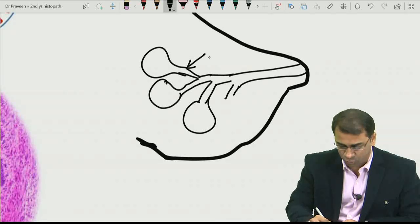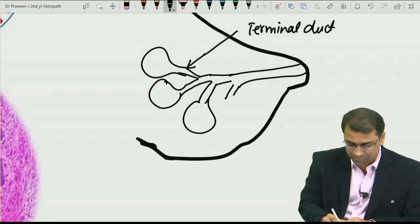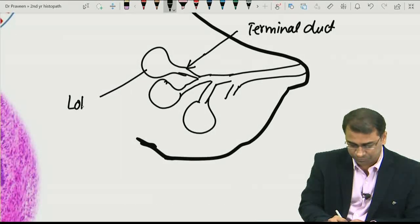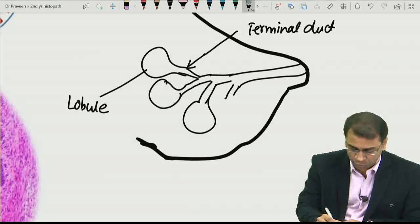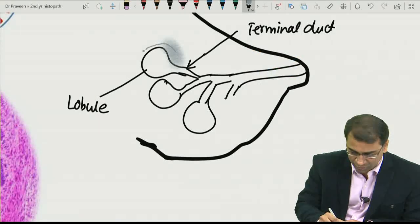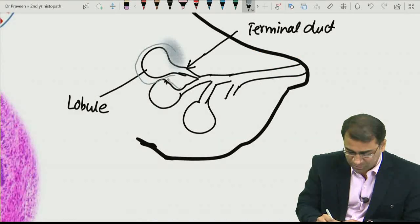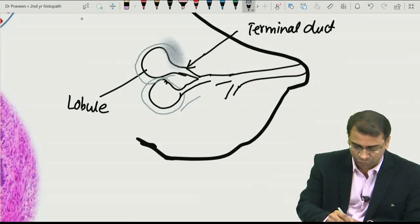Now, this part is called as terminal duct, and this part is called as lobule. Then what happens? Around the lobule, there are some stroma. The stroma around the lobule like this. So, I am just putting the stroma in a grey colour. So, it becomes more easy for you to understand.